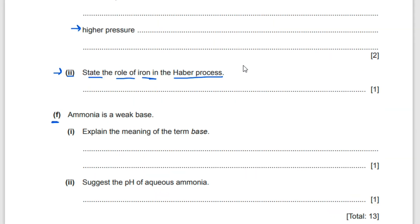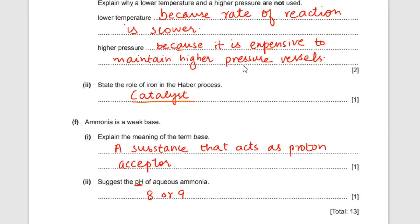Question f: ammonia is a weak base. Explain the meaning of the term 'base'. A base is a substance that acts as a proton acceptor. Acid is a proton donor and base is a proton acceptor.